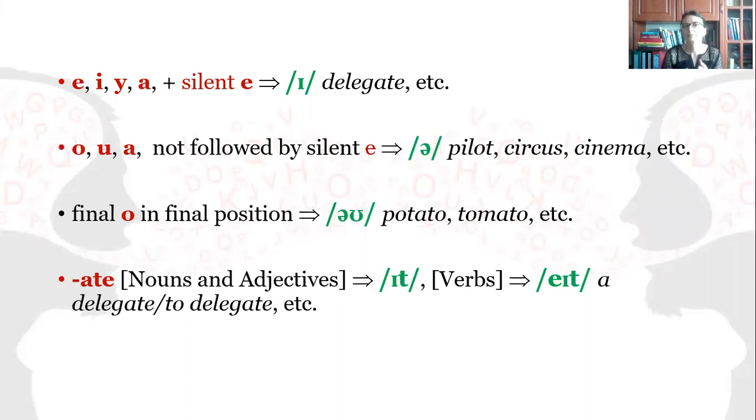the letters E, I, Y, A, when followed by a consonant plus silent E, are pronounced as short I, as in delegate.